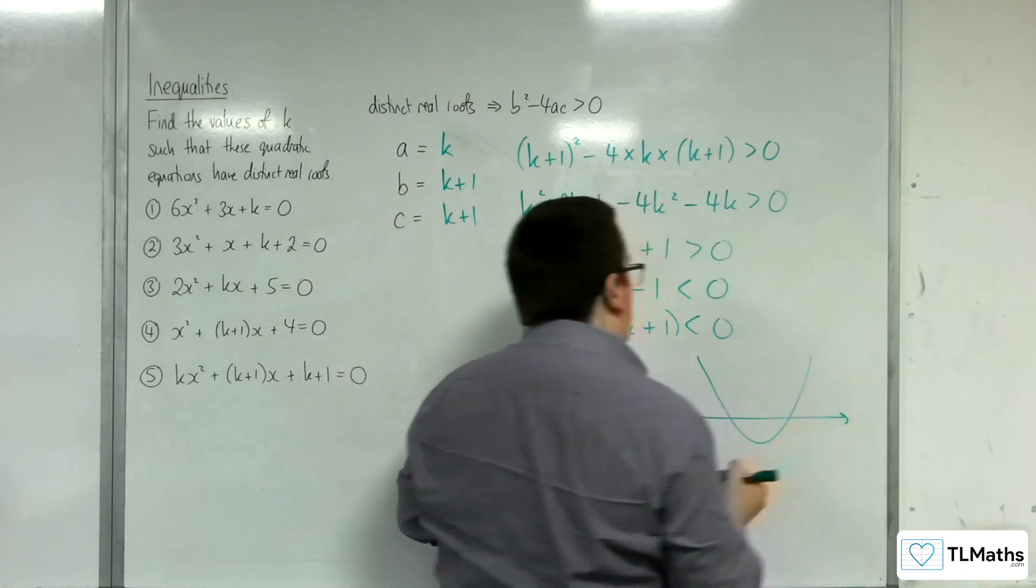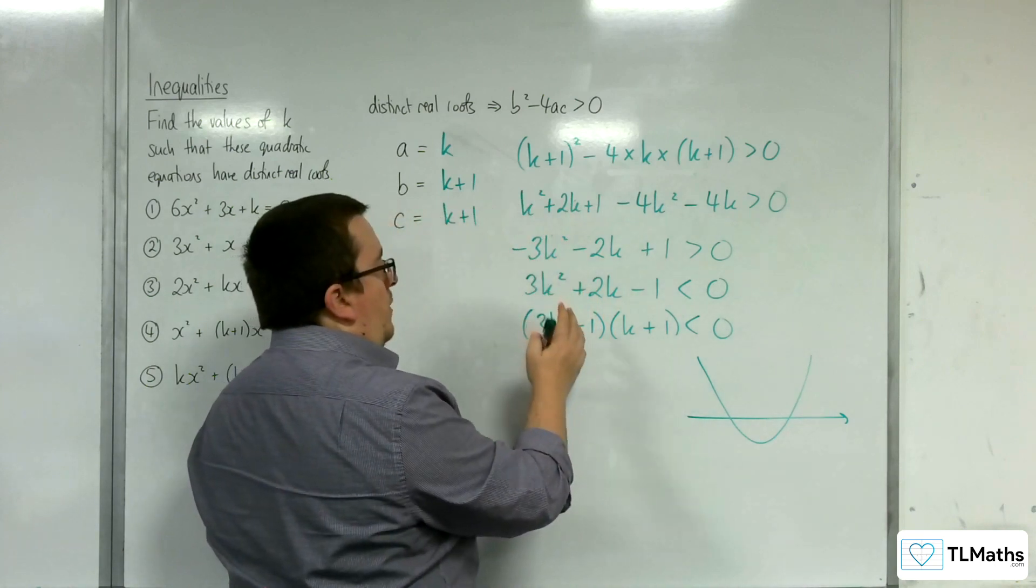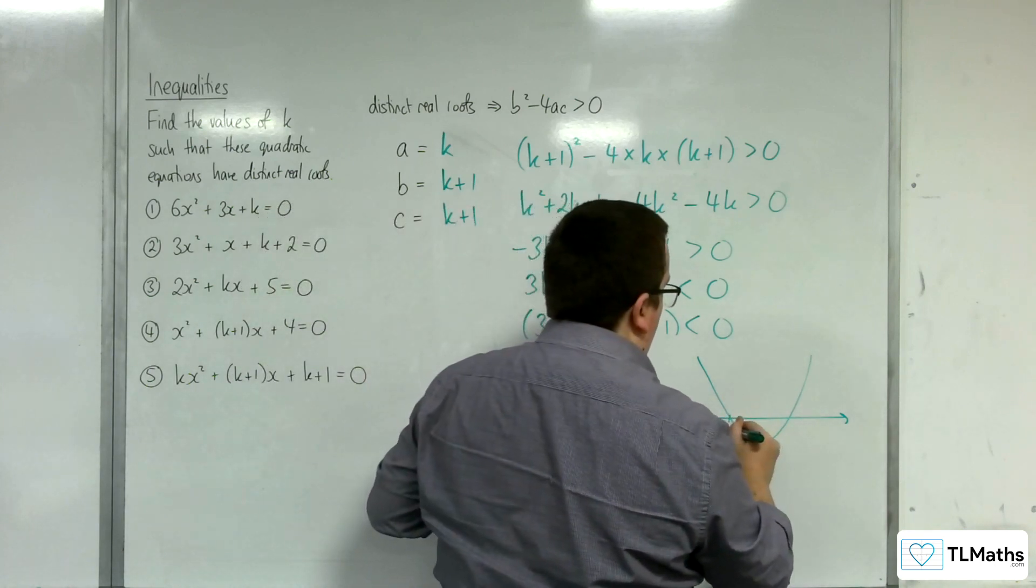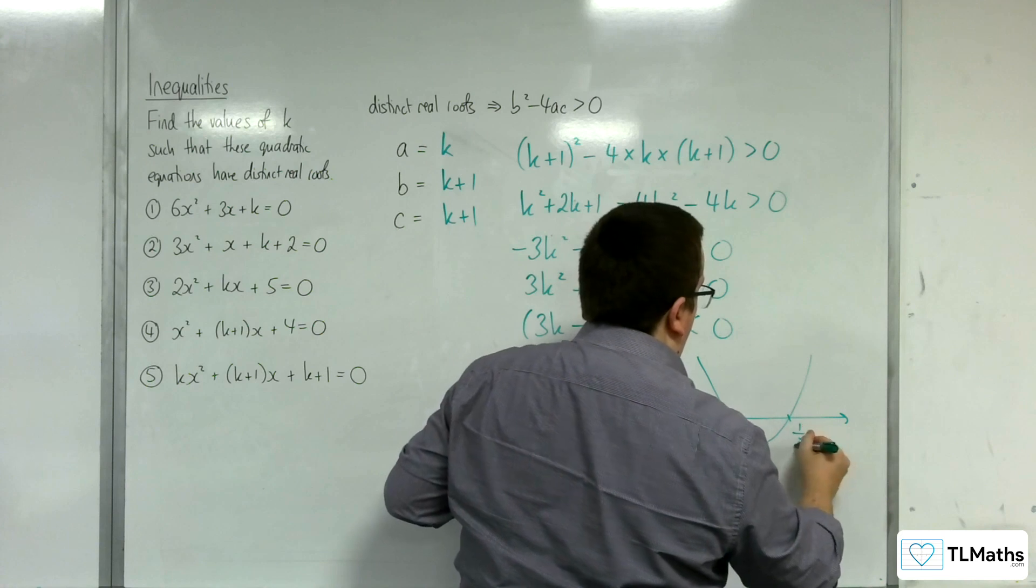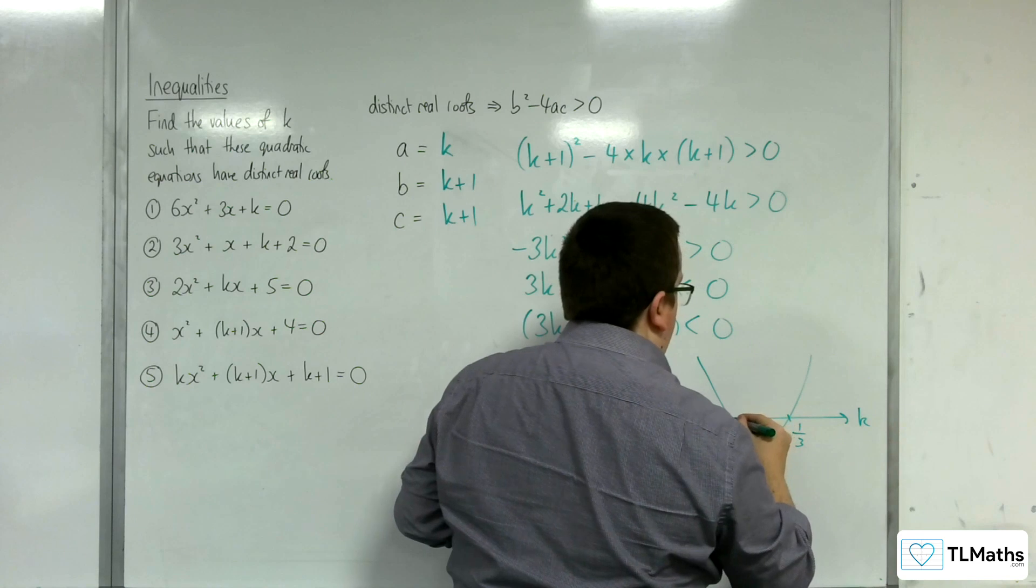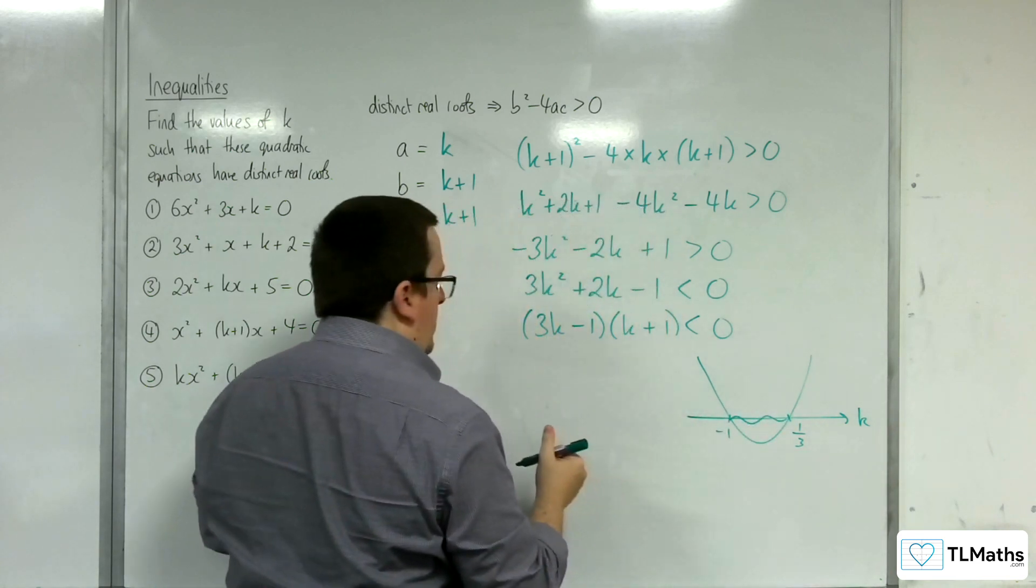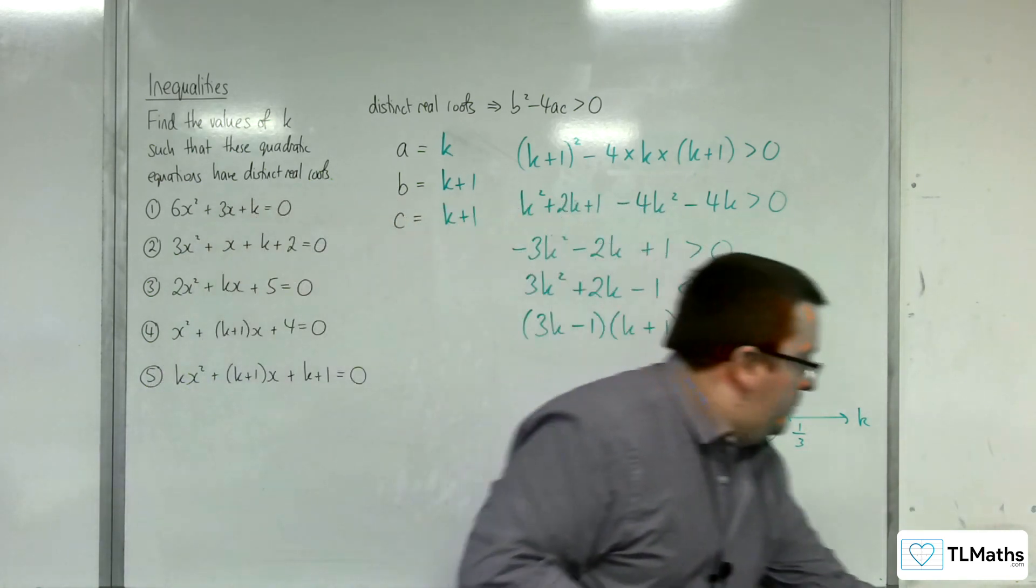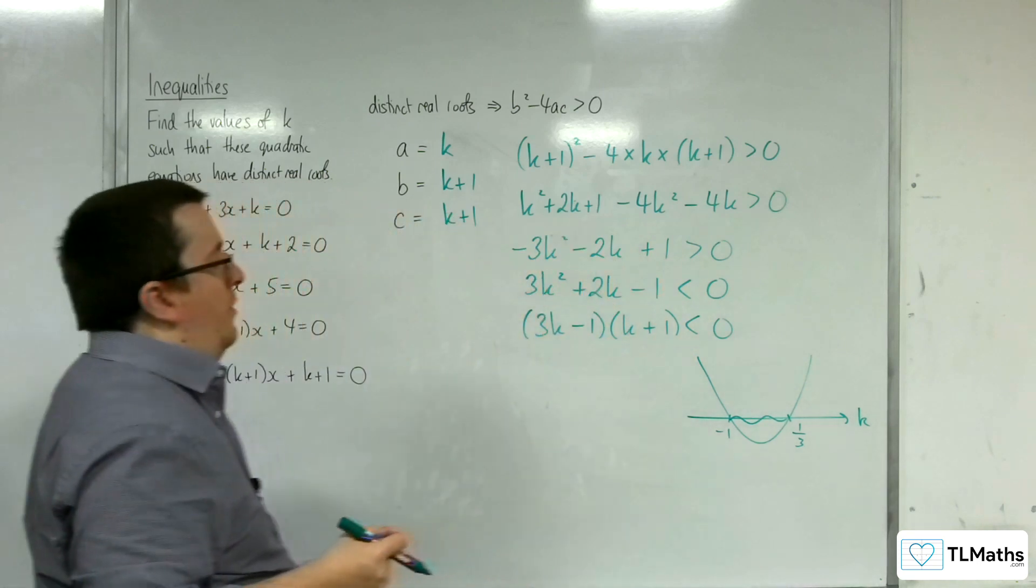There's my parabola. It's going through a third and minus 1. Where is the parabola below the k-axis? It's there. That's between the minus 1 and a third.